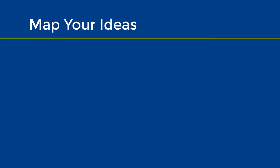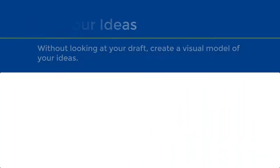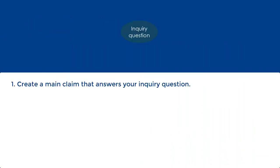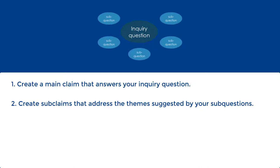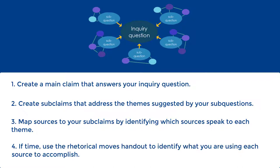The first technique is to map out your ideas without looking at your draft. Write down your main claim or central thesis, or that answer to your central inquiry question. Then write out your sub-claims that address various aspects implicated by your thesis, or that answer the themes suggested by your sub-questions. Then indicate what sources go with each sub-claim, or that answer specific sub-questions. It would also be good to indicate the rhetorical move or moves used for each source. We'll cover rhetorical moves in just a moment, so hang on to that thought.